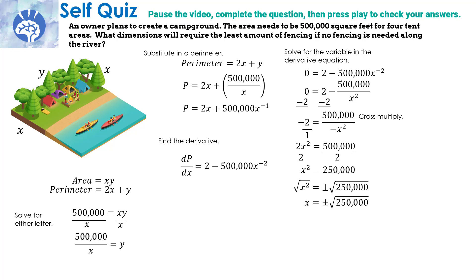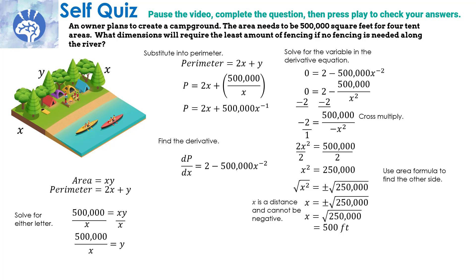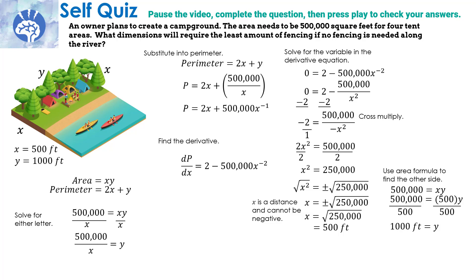Cross multiplying: negative 2 times negative x squared is 2x squared, and 1 times 500,000 is 500,000. Both are even so divide by 2: x squared equals 250,000. Taking the square root of both sides, x equals the square root of 250,000, which is 500 feet — distance can never be negative. Now using the area formula: 500,000 equals x times y, substituting 500 for x and dividing both sides by 500 gives y equals 1,000 feet. So the two sides are 500 feet and y is 1,000 feet.